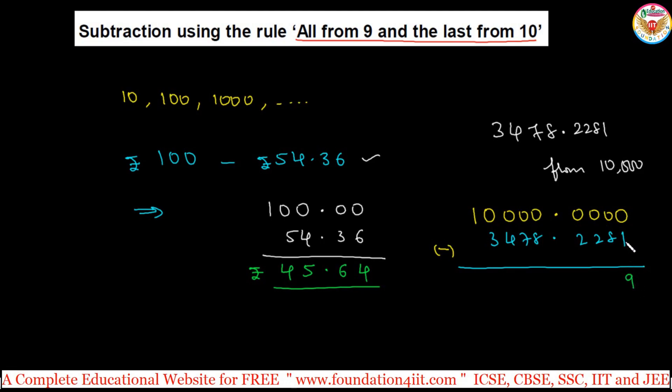So 10 minus 1 is 9. Remaining all, that is only from the 9. So simple: 9 minus 8 is 1, 9 minus 2 is 7, 7, point, 9 minus 8 is 1, 9 minus 7 is 2, 9 minus 4 is 5, 9 minus 3 is 6.